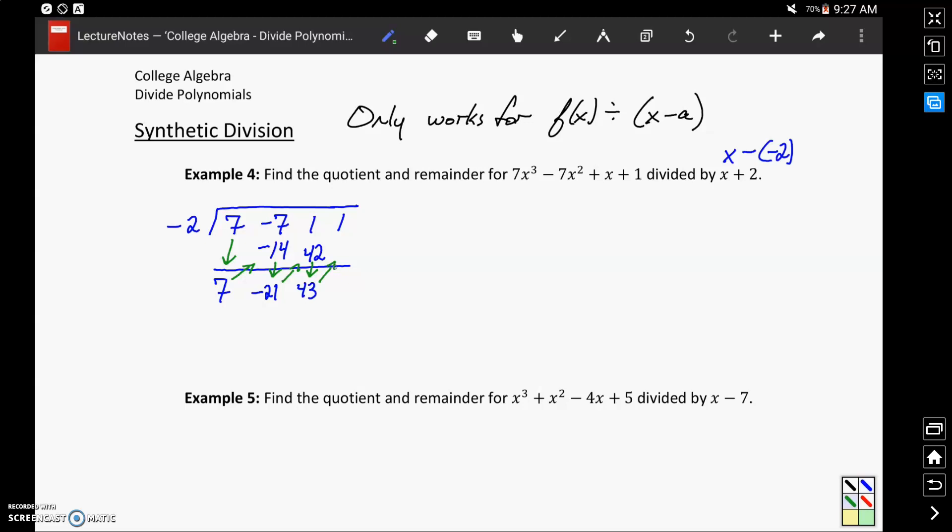And then multiplying again by negative 2 will give us negative 86. Adding those together will give us negative 85. So that zigzag pattern of multiplying and adding is just a repeated process.